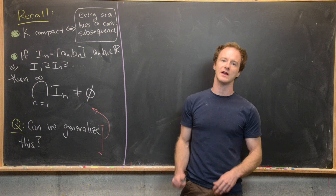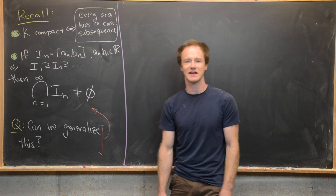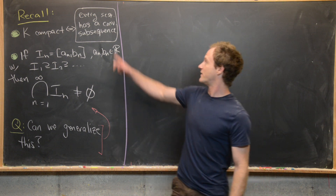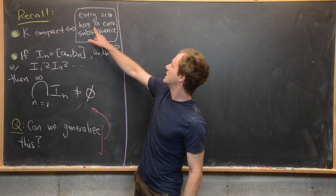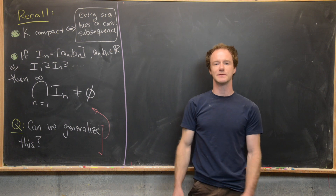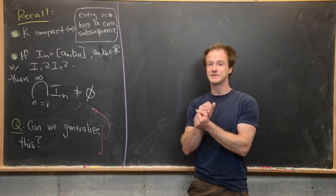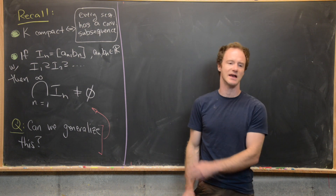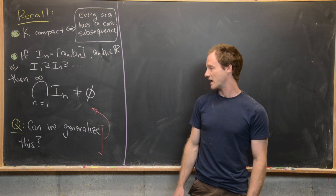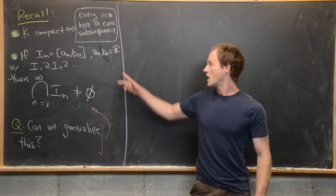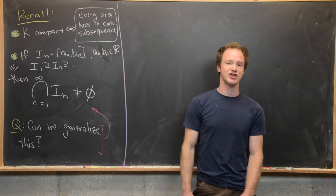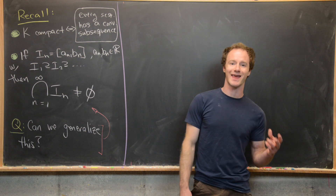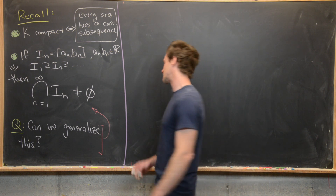Recall in the previous video we proved that a set is compact if and only if it's closed and bounded — with the other definition having to do with every sequence having a convergent subsequence where that subsequence converges to something in the set itself. So review that if you need to. Our goal is to generalize this nested closed interval theorem. Let's first show that we cannot do it with just closed sets.